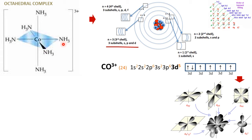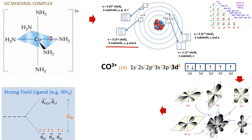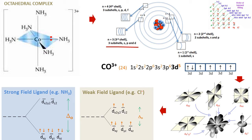In an octahedral complex, the NH3 ligands are arranged along the principal axis. As their lone pairs approach the central metal ion, they cause repulsion in the d orbitals. Since the dx²-y² and dz² orbitals are aligned along the principal axis, maximum repulsion occurs there, causing electrons to move into the dxy, dyz, and dxz orbitals and creating pairing there. This happens for strong field ligands; weak field ligands do not impact the pairing of electrons.